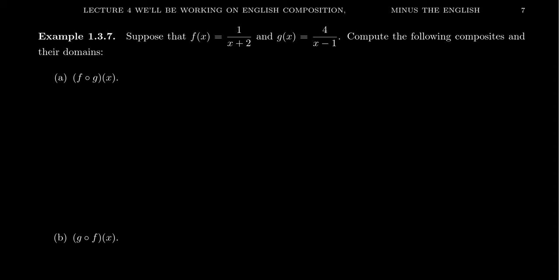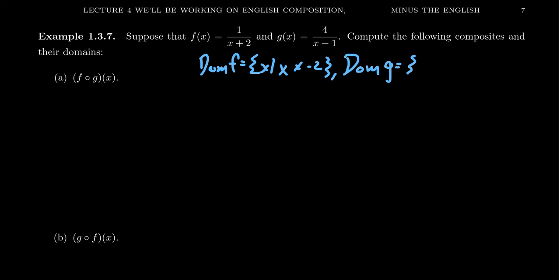Rational functions do have some restrictions on their domains. The first function f(x), given as 1 over x plus 2, has domain all real numbers x such that x does not equal negative 2 — that makes the denominator go to 0. Likewise, g(x) is 4 over x minus 1, and the domain of g is all real numbers x such that x does not equal 1. So that's the domain of the two functions.